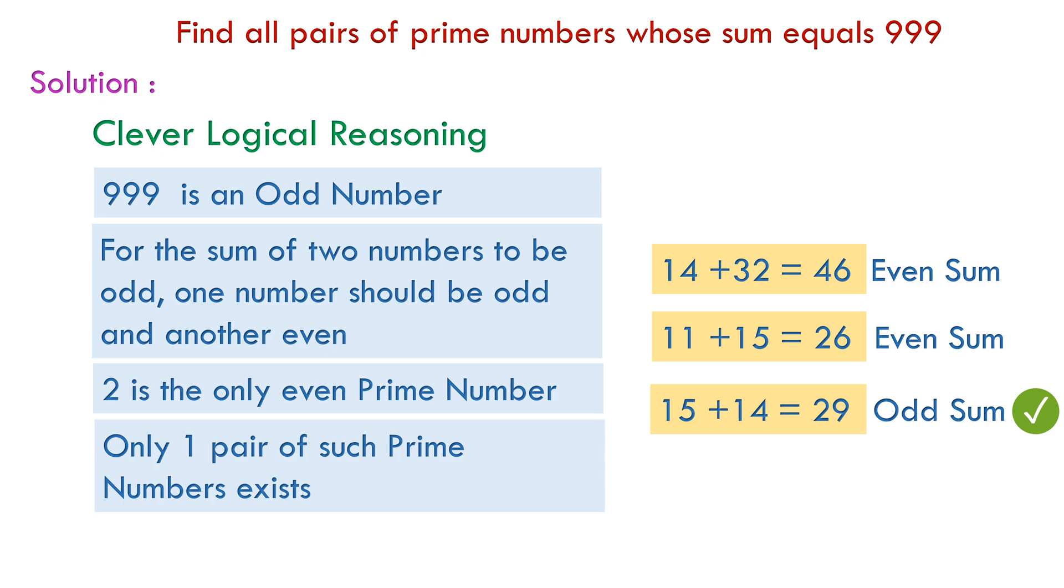Now, what should be added to 2 to make 999? It's 997. So the prime numbers are 2 and 997.